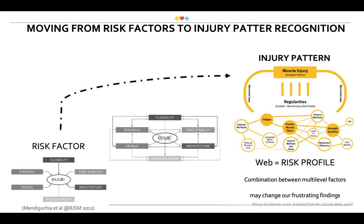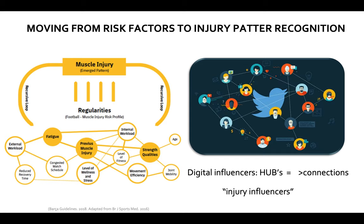Here I'm trying to show that we should move from risk factors to injury pattern recognition — it's a different mindset. At the beginning we were able to identify risk factors, but now, since we have the web of determinants, it's a way to think about risk profile that allows us to see the combinations between risk factors. Doing that, maybe we can change our frustrating findings. Looking closer at the figure, the connections make certain variables become hubs.